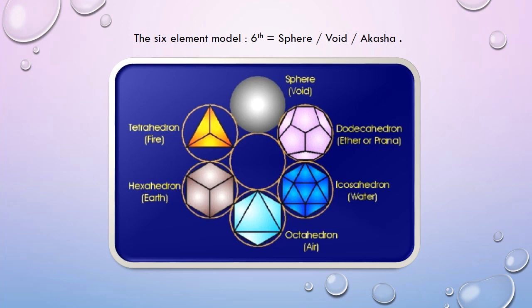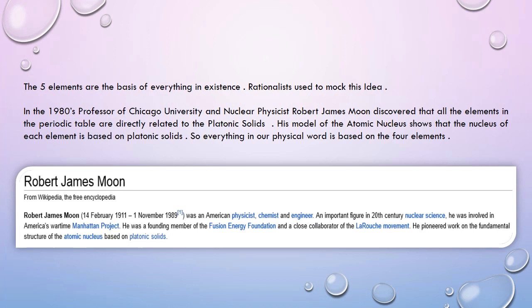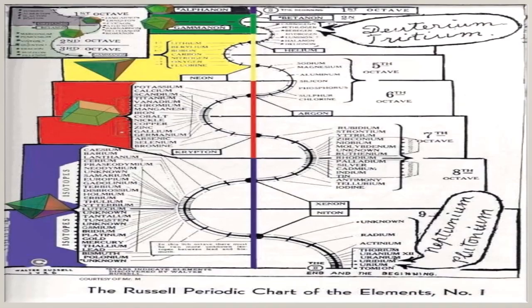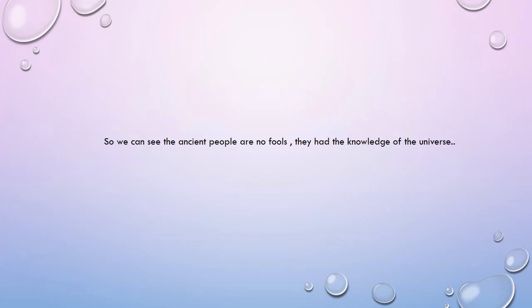We can also consider the field as the fifth element and the sphere or void as the sixth element. The five elements are the basis of everything in existence. In the 1980s, professor and nuclear physicist Robert James Moon of the University of Chicago discovered that all the elements in the periodic table are directly related to the platonic solids. His model of the atomic nucleus shows that the nucleus of each element is based on platonic solids, so everything in our physical world is based on the four elements. The Russell periodic chart shows the elements with corresponding platonic geometry. So the ancient Hindus are not foolish people — they understood the universe far better than modern material scientists who consider matter as the ultimate reality.